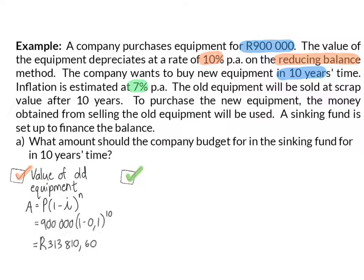Next, we need to determine the cost of the new equipment after inflation. Inflation is always calculated at a compound rate, and therefore we can immediately substitute into our compound formula. The original amount for the equipment was R900,000 and inflation will be 7% for the 10 years. That means the cost of the new equipment will be R1,770,436 and 22 cents.